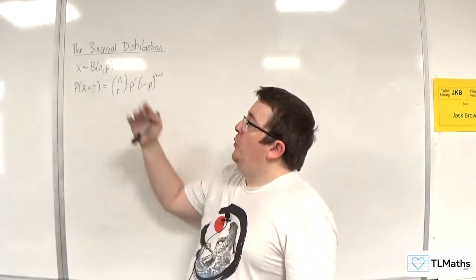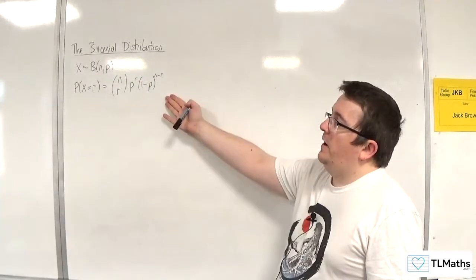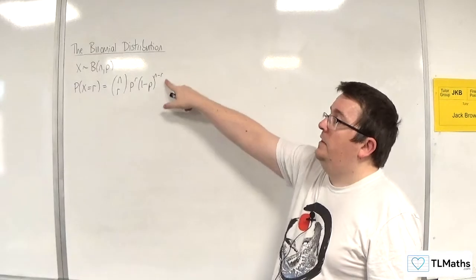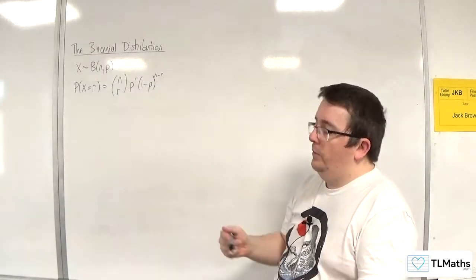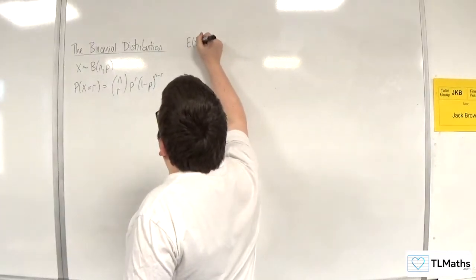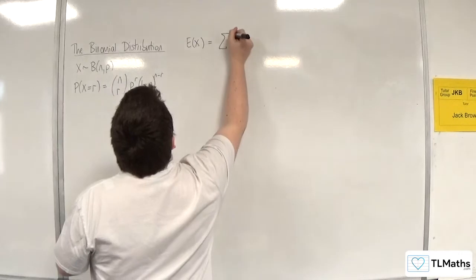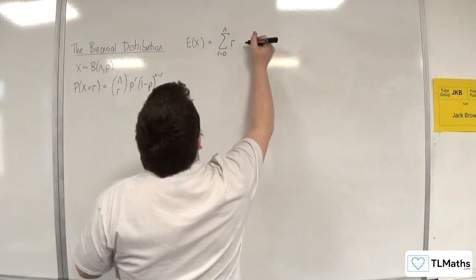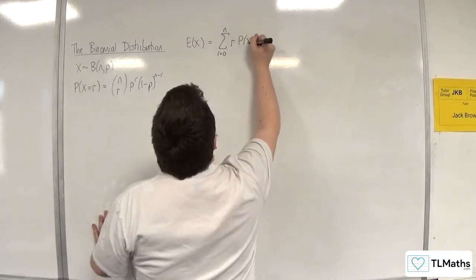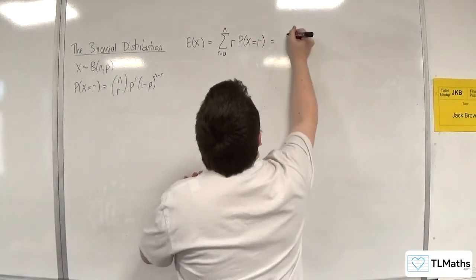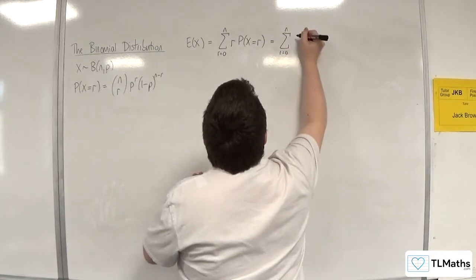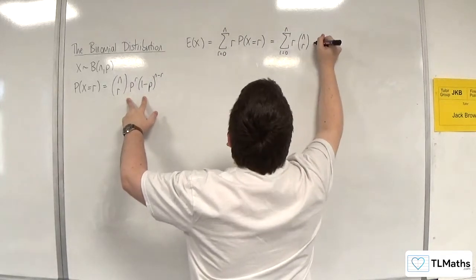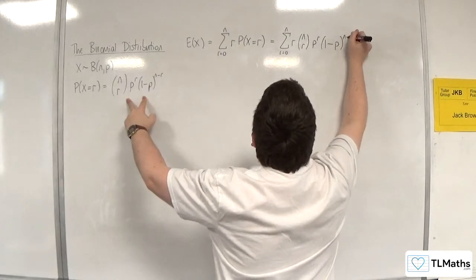So X is a binomial distribution with n and p as its parameters. The probability of X being equal to r is nCr times p to the power of r, times 1 minus p to the power of n minus r. E(X) is the sum from r equals 0 up to n of r times the probability of X being equal to r, which is the sum from r equals 0 to n of r times nCr times p to the r times 1 minus p to the n minus r.